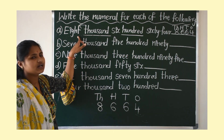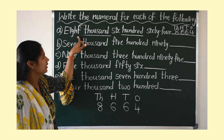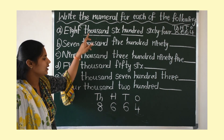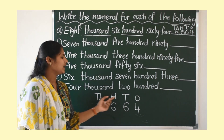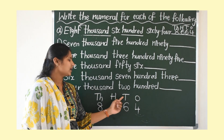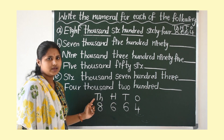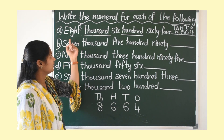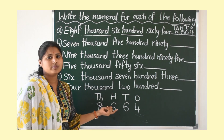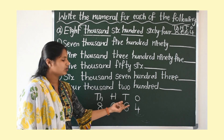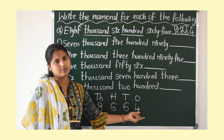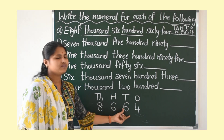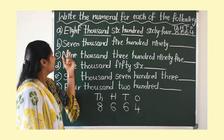How did you understand? First, see which place value the number name started with. Then write the place values. Next, write down how many 1000's, how many 100's, how many 10's, and how many 1's are there. Write those down and we will get the number.